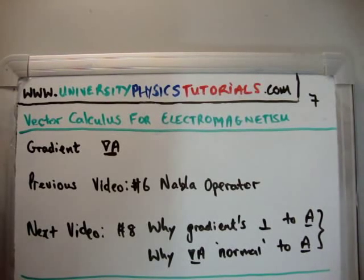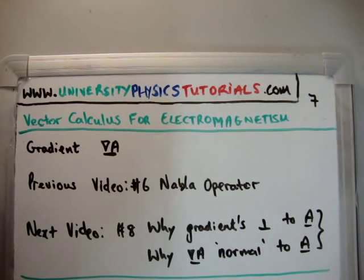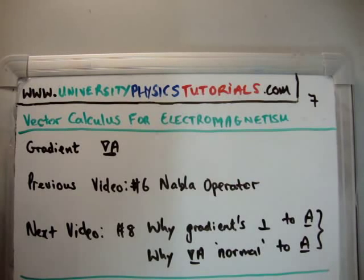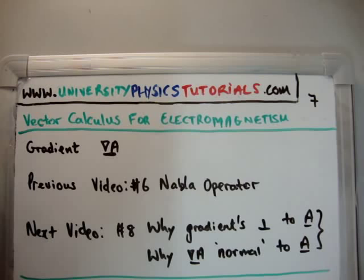In this video I'm going to continue on with my tutorials on vector calculus for electromagnetism. This is video number 7 and I'm going to discuss the gradient. I'd like to draw your attention to my website, universityphysicstutorials.com. The previous video is number 6 where I discussed the nabla operator, and I'll have part 2 of that on video number 11. The next video is number 8, where I'm going to discuss why gradients are perpendicular — or normal — to a surface.